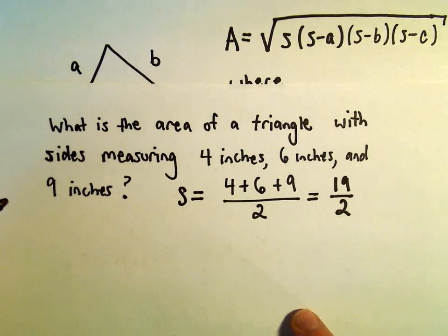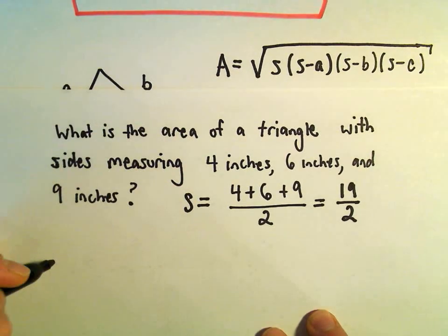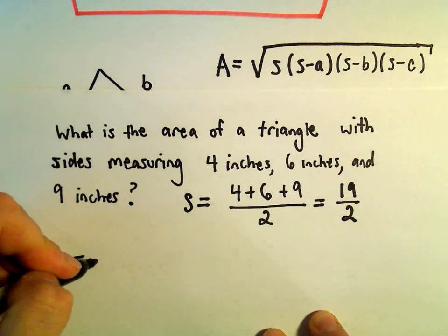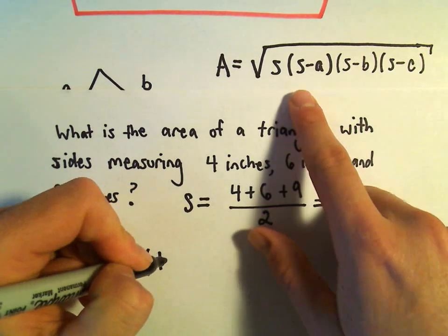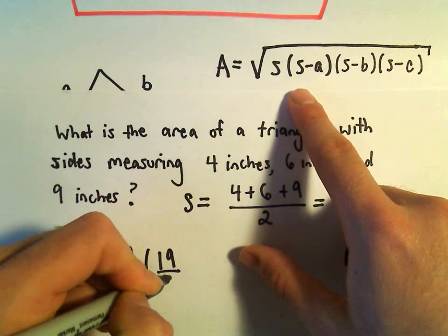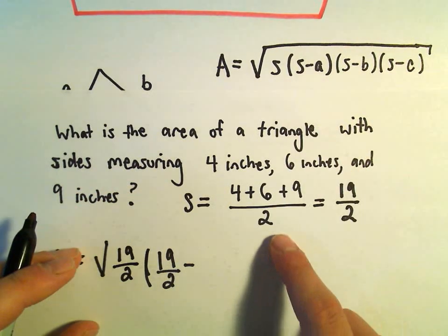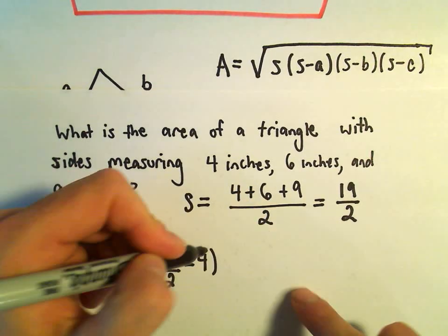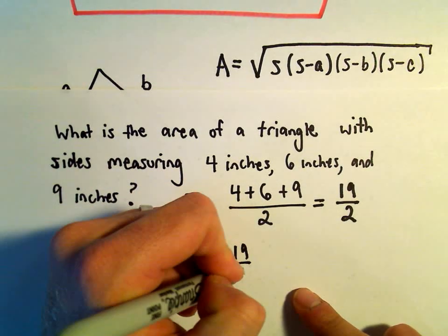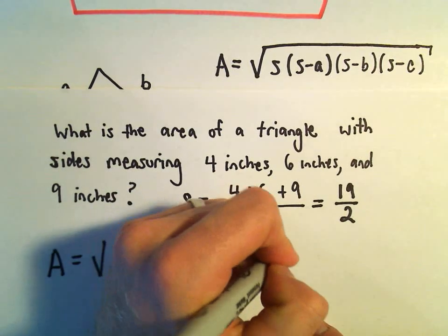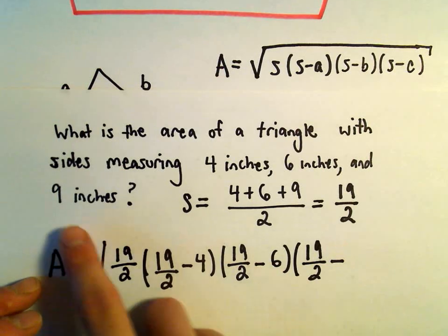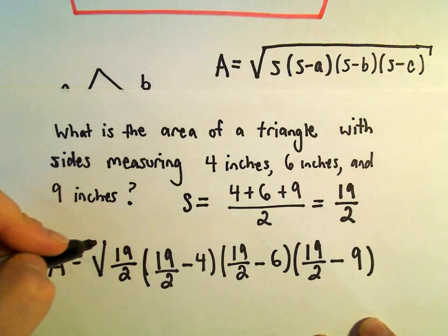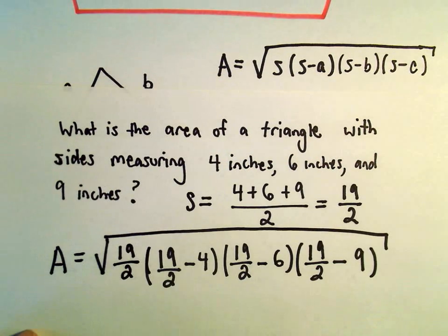And then it says underneath our square root, so we would basically just have the area equals the square root of, let's see, so 19 over 2. Then we'll take 19 over 2, and we'll subtract away the value for A. We can let that be the 4. Then we'll take 19 over 2, subtract away the value of 6. And then we'll take 19 over 2, and subtract away the value of C. We can let that be 9.